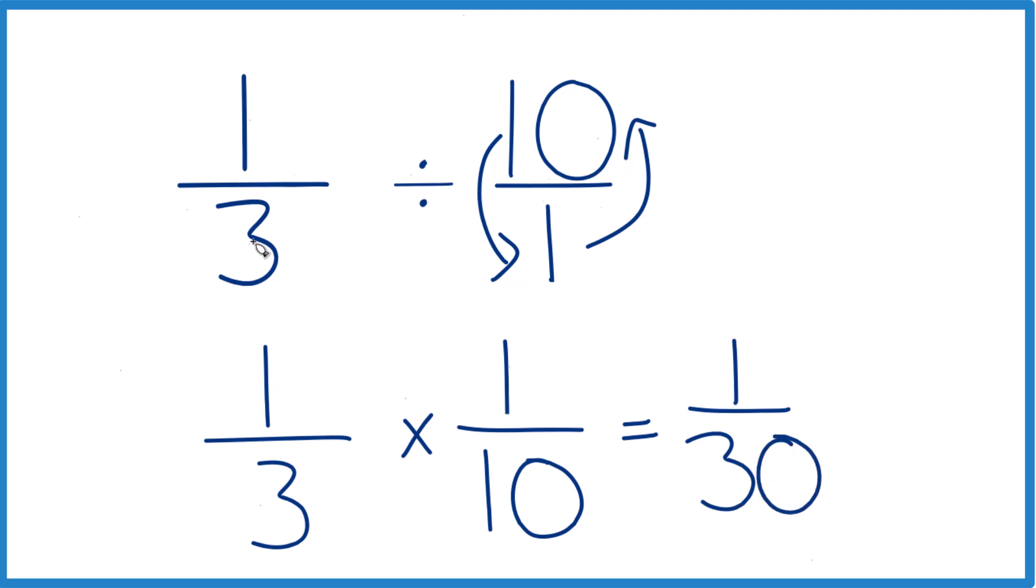So 1/3 divided by 10, or 1/3 times 1/10, that gives us 1/30. And that makes sense because we have 1/3. We're trying to see how many times this whole number 10 fits into 1/3. 1/3 is less than 1, so our answer has to be less than 1. It should be less than 1/3 as well, which it is.